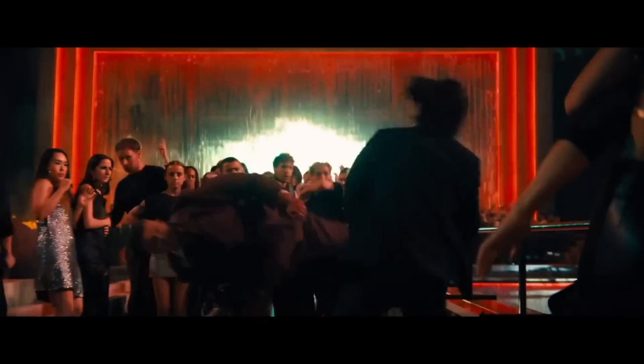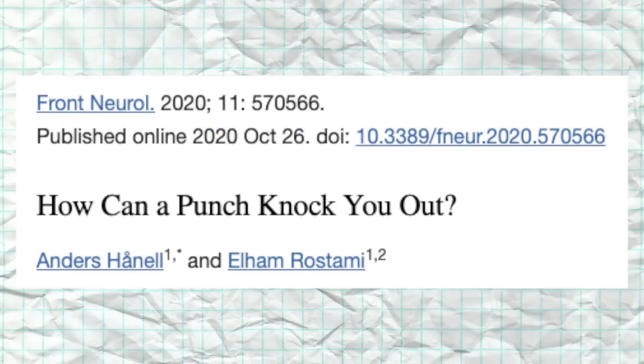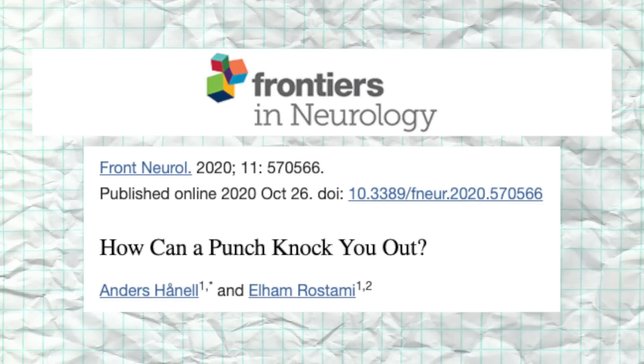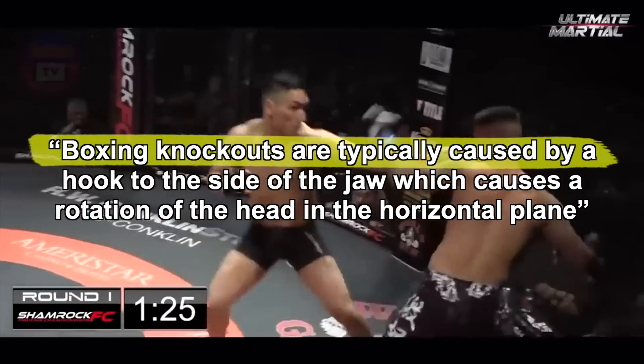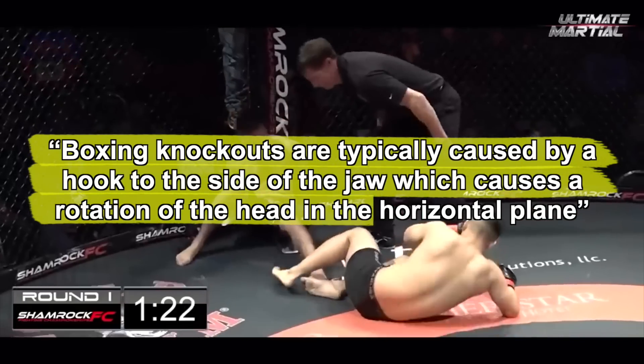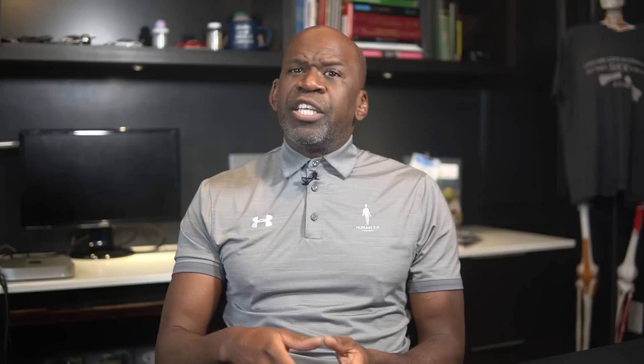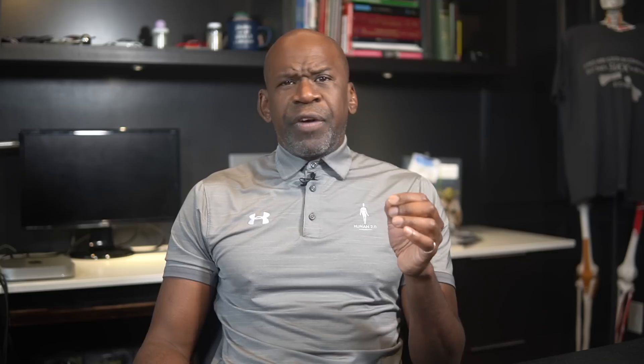A clean spinning back kick to what appears to be Mr. Wick's jaw would easily be enough to knock him unconscious. A 2020 article by Dr. Anders Hanel, published in Frontiers of Neurology, explains that boxing knockouts are typically caused by a hook to the side of the jaw, which causes a rotation of the head in a horizontal plane. When the head rotates sharply, the brain — floating inside the skull in cerebrospinal fluid — is jostled against the interior walls of the skull. Concussion and loss of consciousness often result, though the exact neurological mechanisms are under debate. Professor Wick is lucky to have had his momentum broken by that floating concrete beam — had it not been there, he may have continued to rotate, landing 30 feet below on his head or neck.